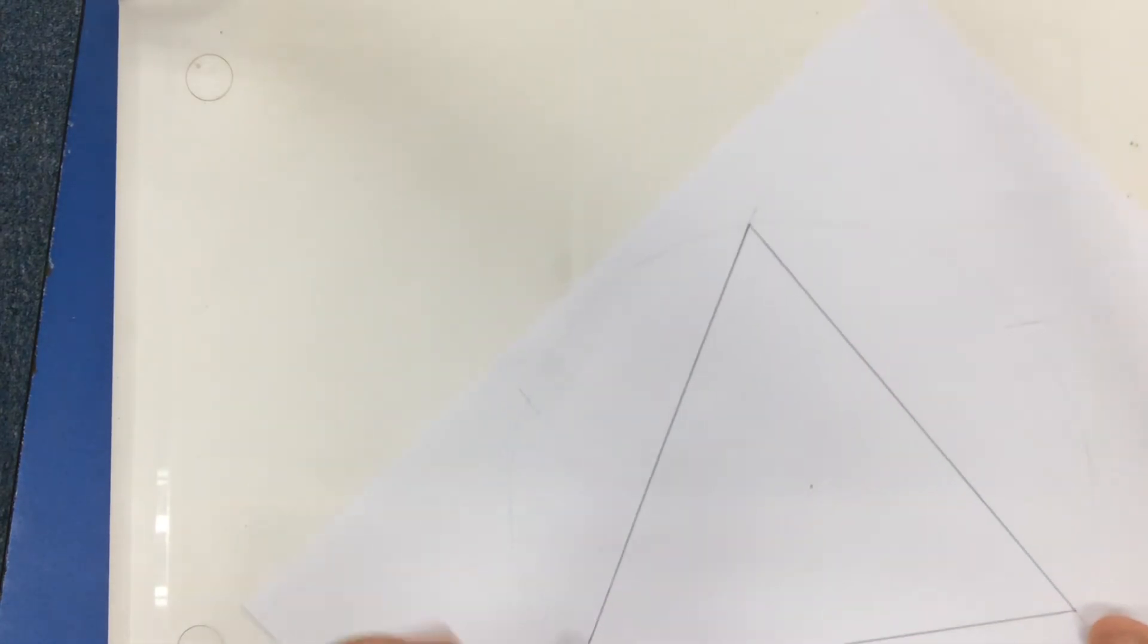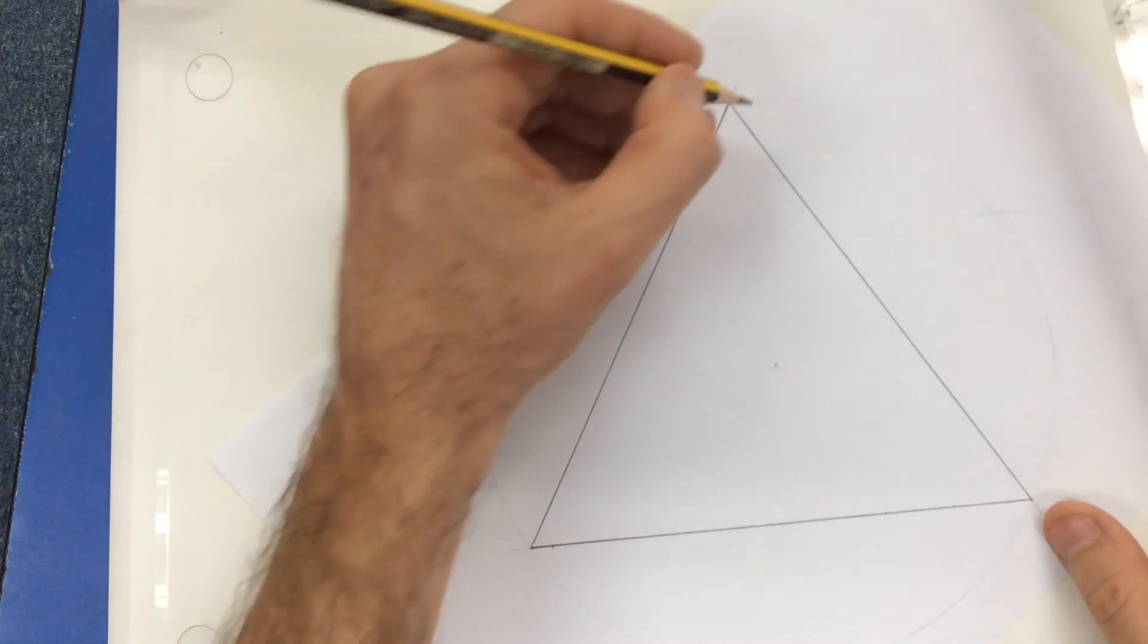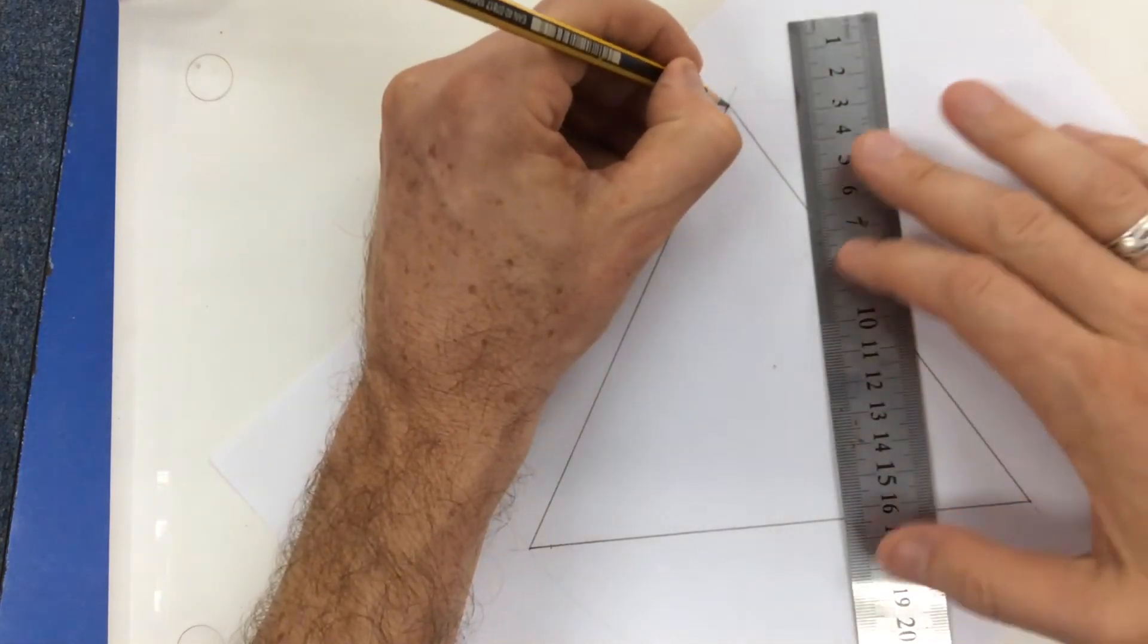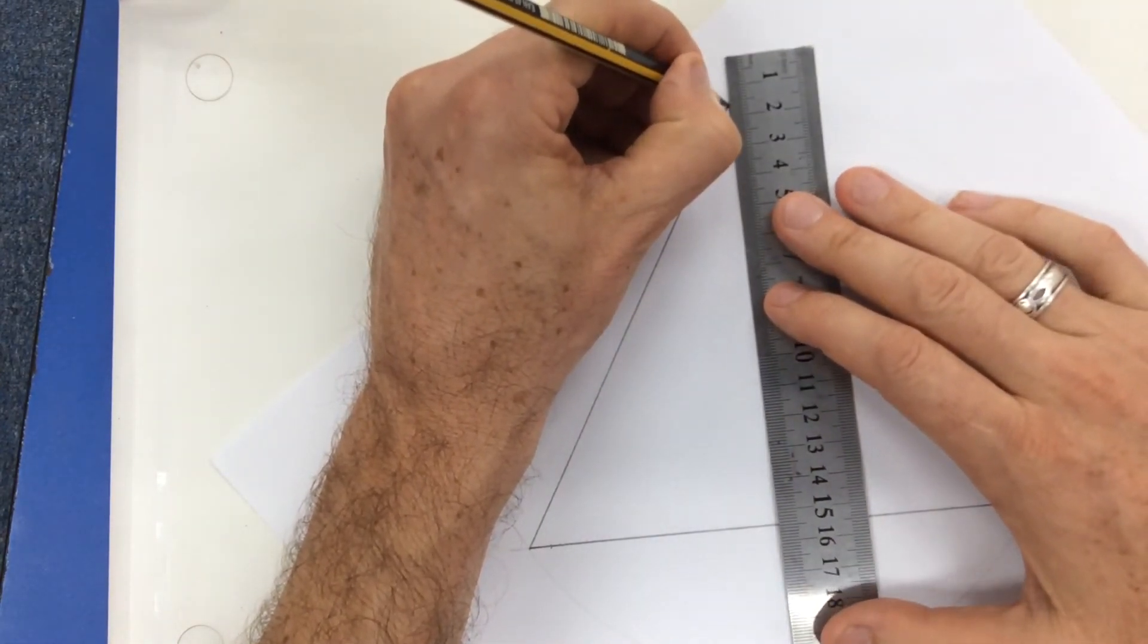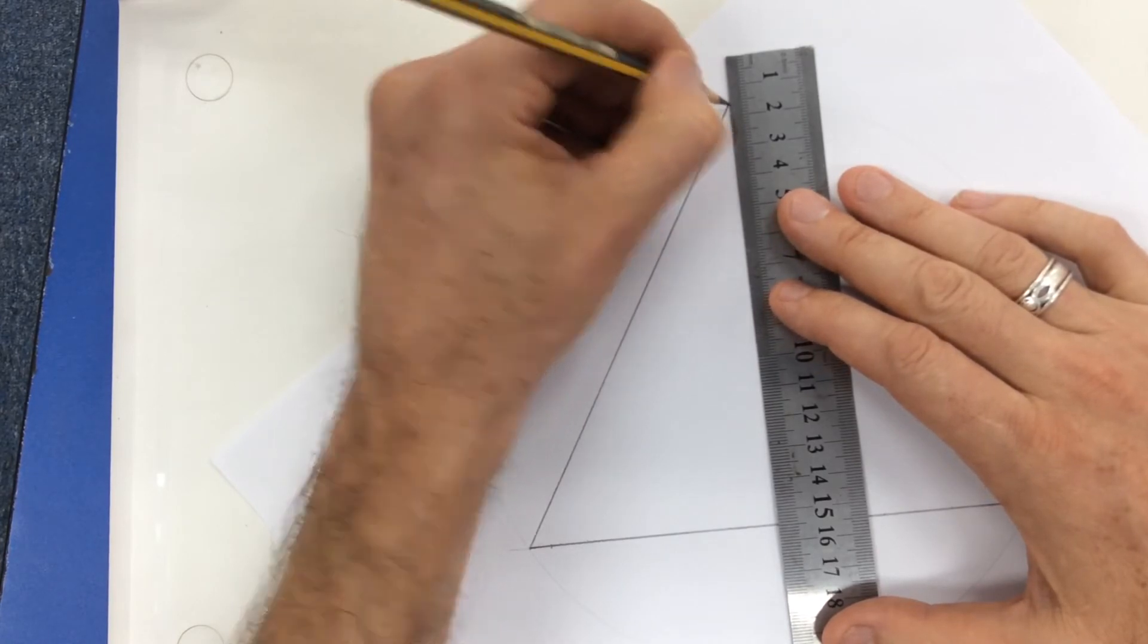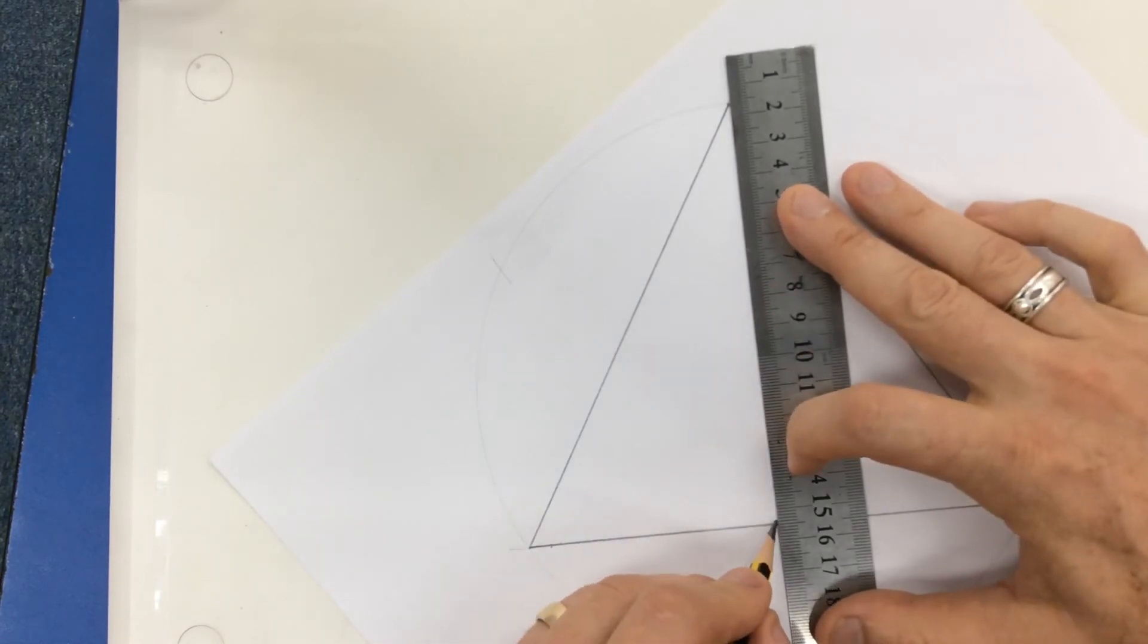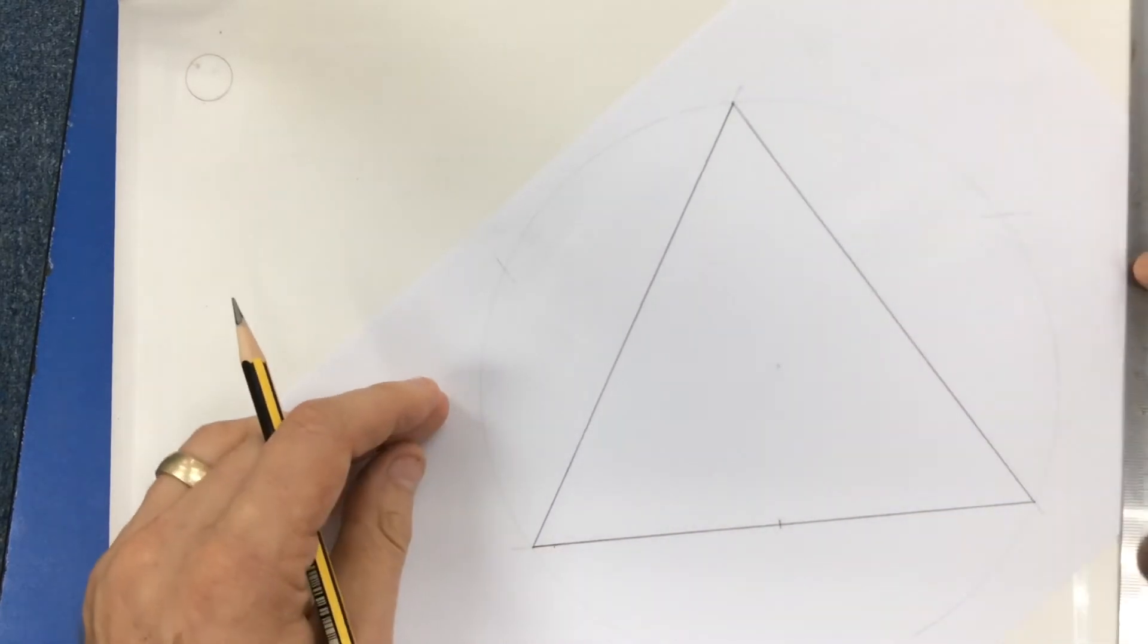Now what I need to do is I need to find the halfway point of this line. And the way I'm going to do that is by connecting one vertex with the point on the outside of the circle that is opposite it. And I'm just going to make a small mark to show that this is halfway.